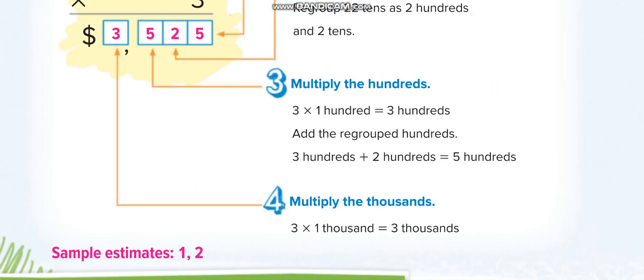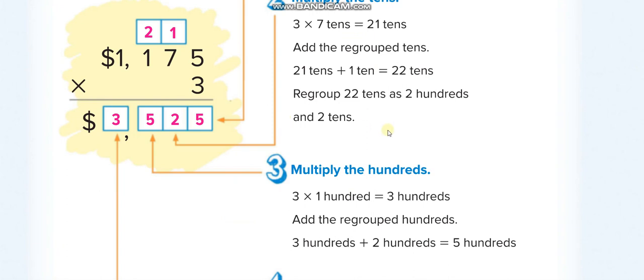Next page, again the same thing we'll do here. First we take 3 and multiply it with all the numbers up one by one. 3 times 5 is 15, we write 5 here, 1 up. 3 times 7 equals 21 plus this one = 22. So 2 here and 2 up.